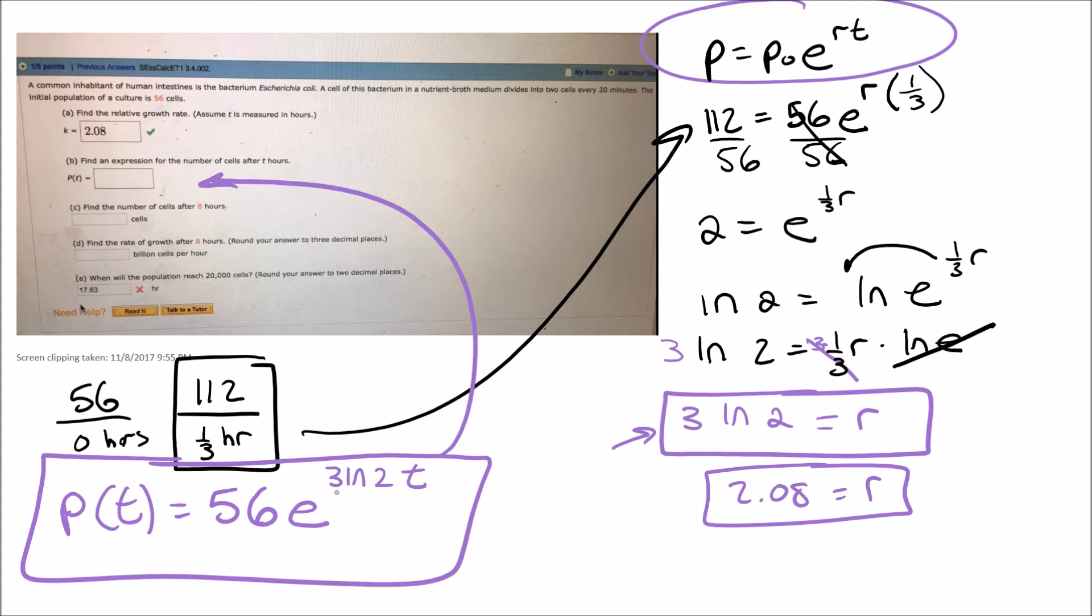And that's going to be your answer to this second one here. Now I don't know if your teacher is going to have you put in 3 ln of 2 times t or if your teacher is going to use the 2.08 from the last question. So it's either going to be this or it's going to be 56 e to the 2.08 t. One of those is the correct answer. I usually like to keep it exact, but since the last answer you got was 2.08, then it might want you to use that value for the next one here.